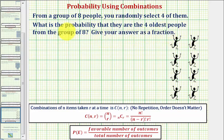So to find the probability of this occurring, we want to compare the favorable number of outcomes to the total number of outcomes. Let's begin by determining the total number of outcomes, which will be the number of ways we can select four people from a group of eight.